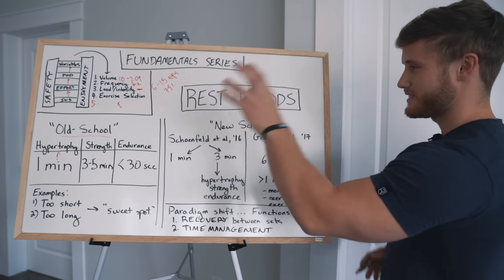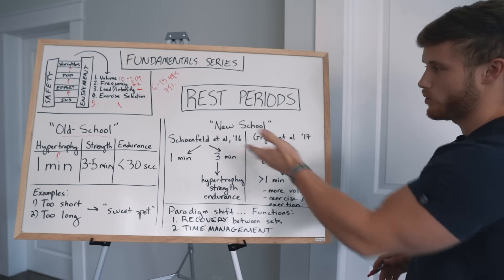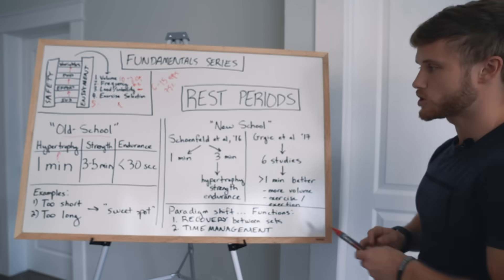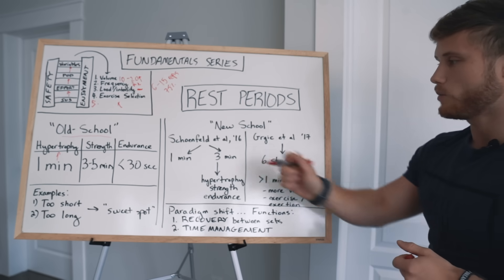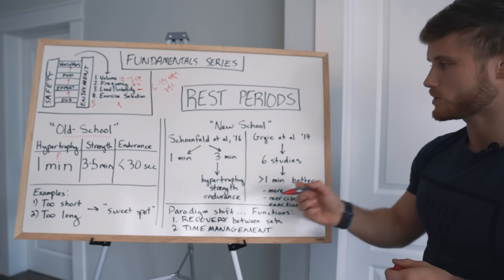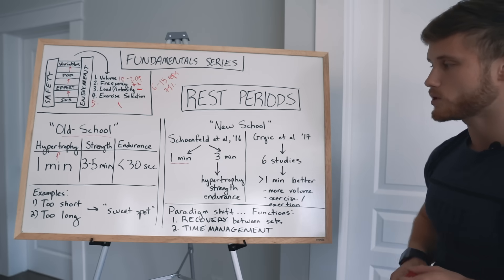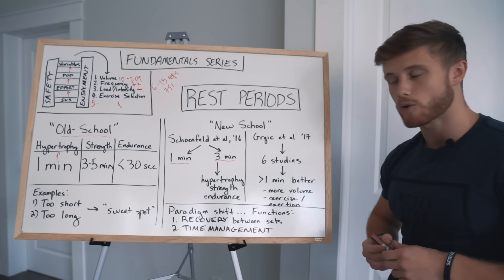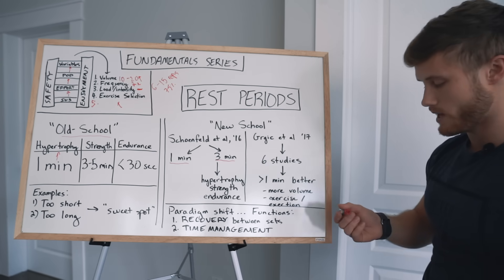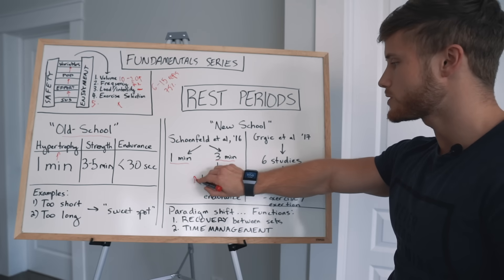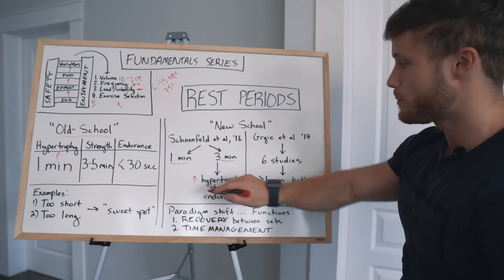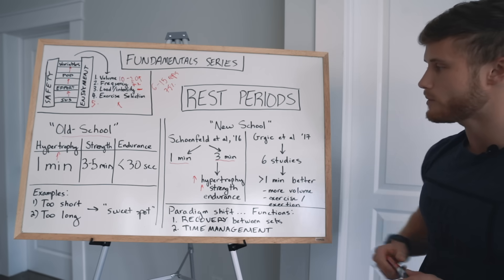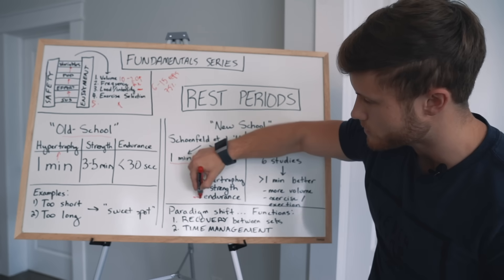Now, more recently, a lot of this old dogma has come under scrutiny by more recent literature. And I'm just going to highlight two of these studies. So the first is from Schoenfeld and colleagues in 2016. And what they did was they split subjects up into two groups. So one group rested for one minute between sets and the other group rested for three minutes between sets. And they ran an eight week full body training program. What they found at the end of the eight weeks was that there was better hypertrophy in the quads, in the triceps, in the three minute rest period group. There was better strength in terms of bench press one rep max and squat one rep max in the three minute group. And there was no difference in muscular endurance between the groups.